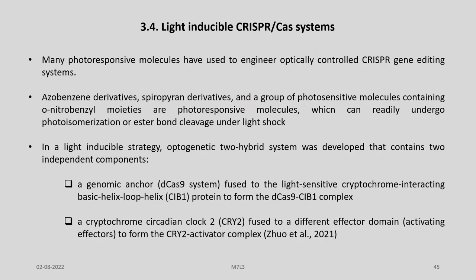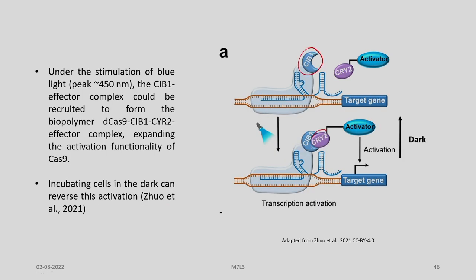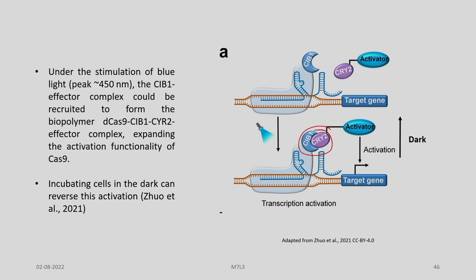Under stimulation of blue light at around 400 nm, the CIB1 effector complex is recruited to form the bipartite D-Cas9/CIB1/CRY2 effector complex, expanding the activation functionality of Cas9. Incubating the cells in the dark can reverse this activation. You can see the CRY2, the target gene, a light source, and that this reaction is reversible — in the dark the opposite reaction takes place.